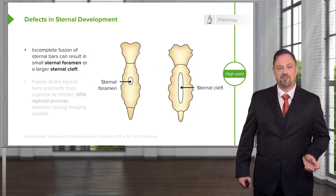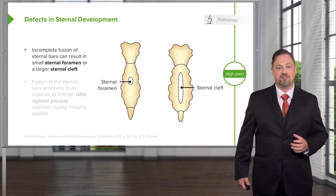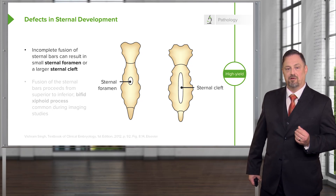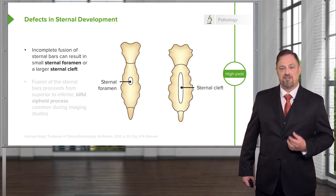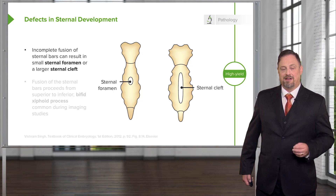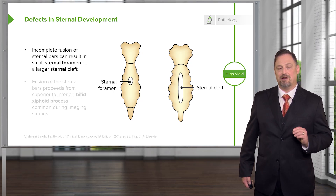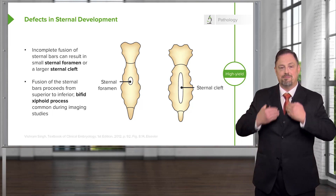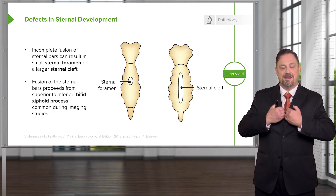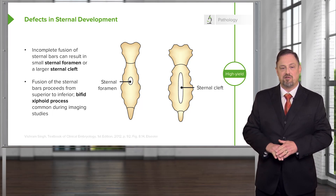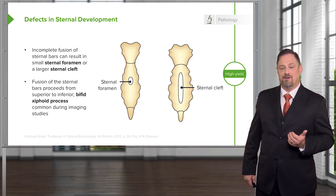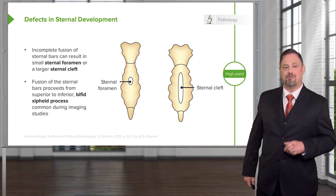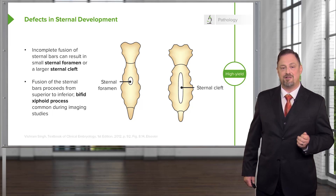Another problem that can occur is if the sternal bars incompletely fuse, or the ossification centers inside the sternal bars don't function as expected, resulting in sternal defects. On the small side, you have sternal foramina; on the large side, you can have large sternal clefts. Small sternal foramina may be completely clinically invisible and only noted on x-ray. Because the sternum closes from a superior to inferior direction, it's not uncommon for the inferior-most portion to remain separate, giving what's called a bifid or split xiphoid process. These are not clinically important but may be noted on x-ray — a split xiphoid process is not indicative of a fracture, it's just a remnant of development.